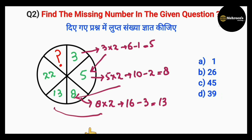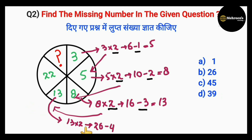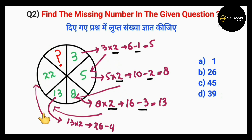We've cracked the pattern: multiply by 2 then minus 1, then minus 2, then minus 3, and so on. So for 13, we apply: 13 into 2 equals 26, minus 4 gives 22, which is the next number. Now for the missing number, we apply the same pattern to 22.